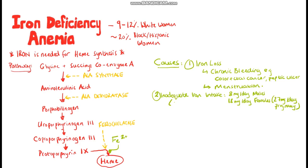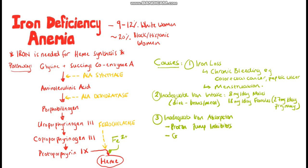Poor absorption of iron is also a cause of iron deficiency anemia. Bear in mind that iron needs acid to be absorbed properly, so people using proton pump inhibitors or patients with a gastrectomy are at risk. Additionally, iron is primarily absorbed in the duodenum, so you can also have problems absorbing iron in conditions like celiac disease.